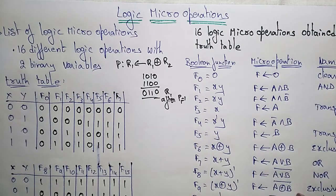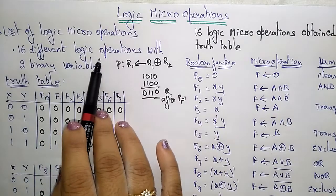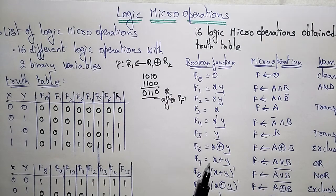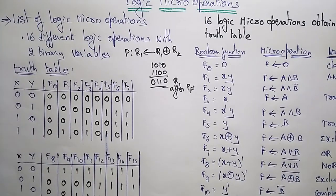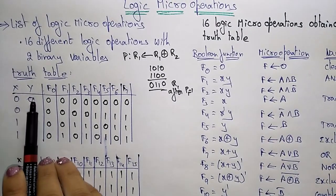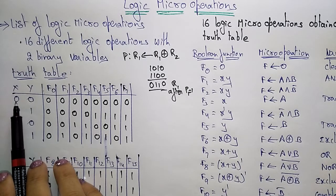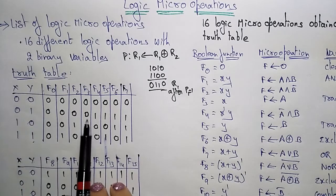There are 16 different logic micro operations possible with two binary variables. The truth table for two binary variables X and Y has four combinations: 00, 01, 10, and 11. From these, we can derive 16 different logic operations.